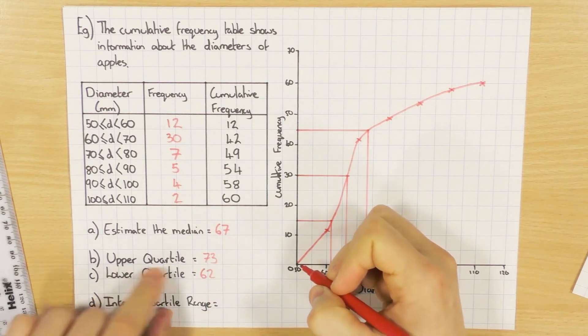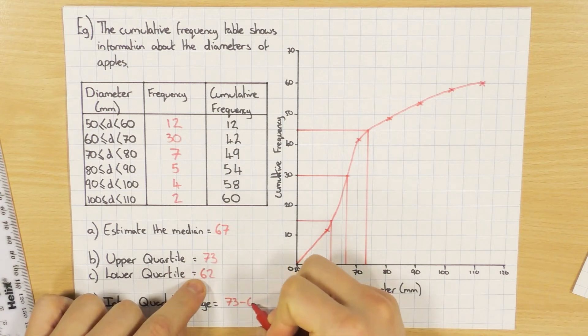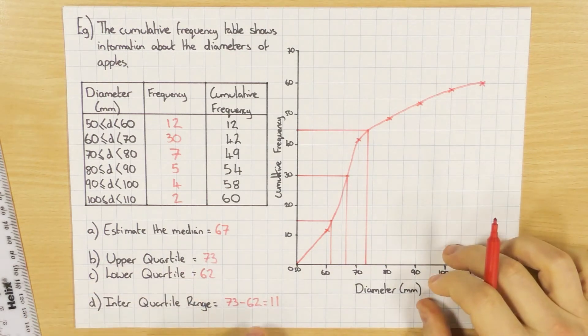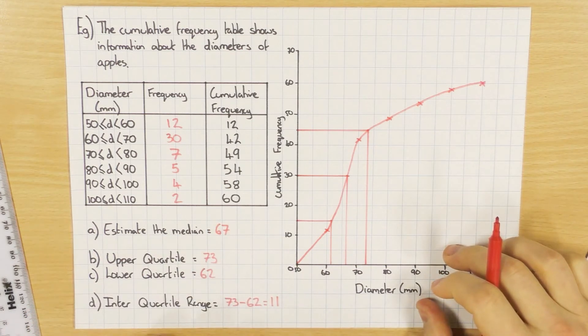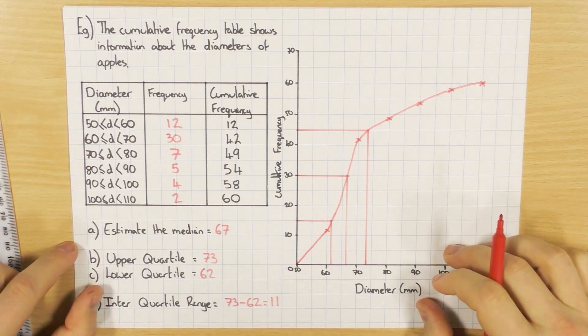So the interquartile range, just as before, is the upper quartile, which is 73, take away the lower quartile, which is 62. And then that gets you 11. So again, this could be put into a box plot, so it's like part B of the question. So make sure you do check out the box plot video once it's done.